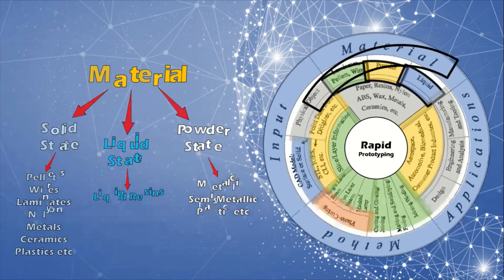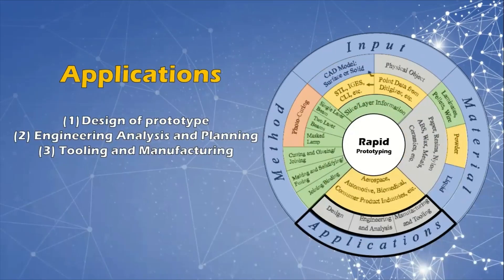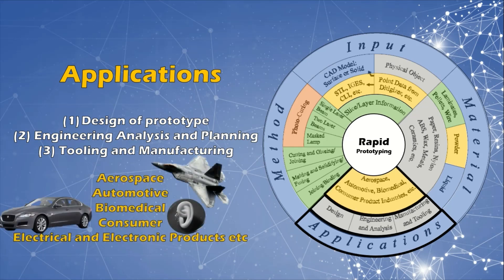Applications: Most of the RP parts are finished or touched up before they are used for their intended applications. Applications can be grouped into: one, design; two, engineering analysis and planning; and three, tooling and manufacturing.